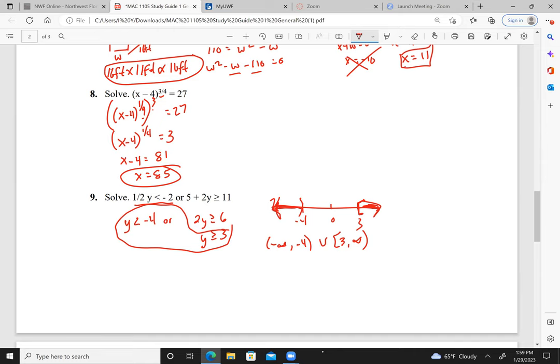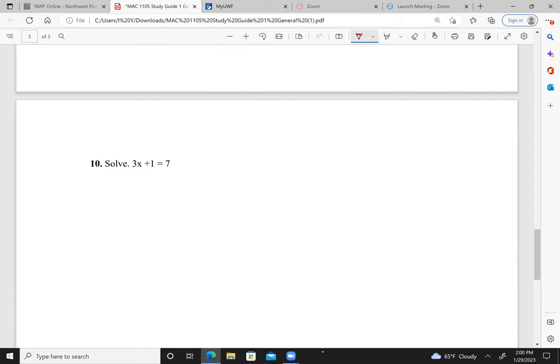So there's 3. Well, actually, there's the 4th one, which is set builder notation. But as I said, typically we don't ask for that. And then I thought I'd give you one to make it nice and easy for you.